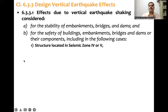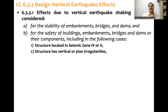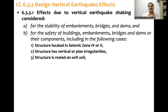Number one: when the structure is located in Seismic Zone 4 and 5, we need to consider the effect of vertical ground motion. Second, when the structure has irregularities — plan irregularities as well as elevation irregularities or vertical irregularities. Third, when the structure is resting on soft soil, we need to consider the vertical component as well.